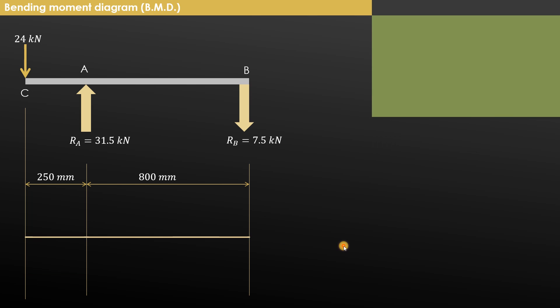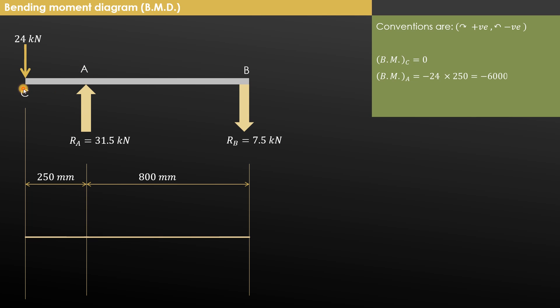The next step is to draw the bending moment diagram. At the end points of a simply supported beam the bending moment is 0, so bending moment at C equals 0 and at B equals 0. We only need to find the bending moment at point A. Considering all forces on the left hand side of A: the 24 kN load at C produces an anticlockwise moment about A, which is negative. So bending moment at A equals minus 24 into 250, which is minus 6000 kN·mm, or minus 6 kN·m.